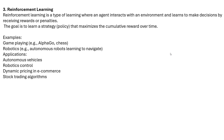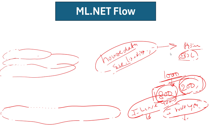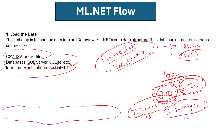Reinforcement learning examples include game playing like AlphaGo and chess, robotics applications, autonomous vehicles and robotic control, dynamic pricing in e-commerce, and stock trading algorithms. In this series we will learn about the ML.NET workflow. The first step is loading the data.